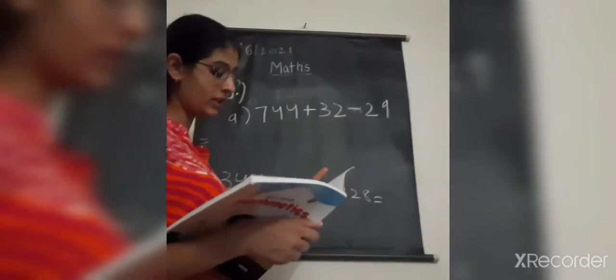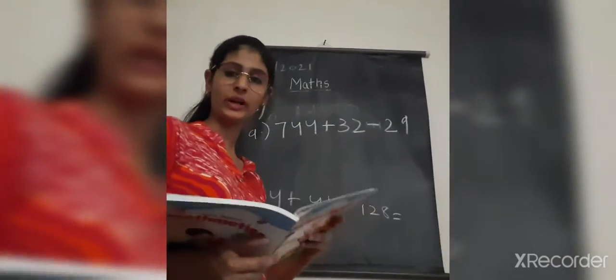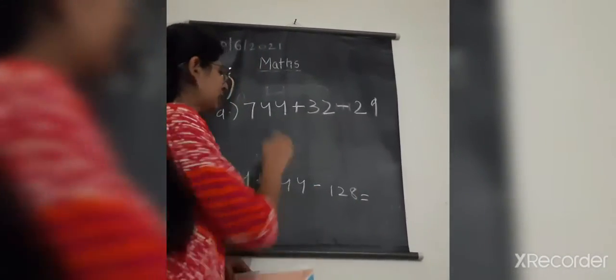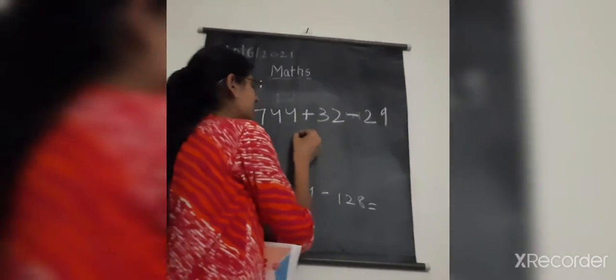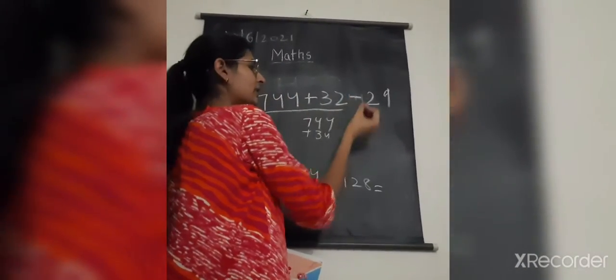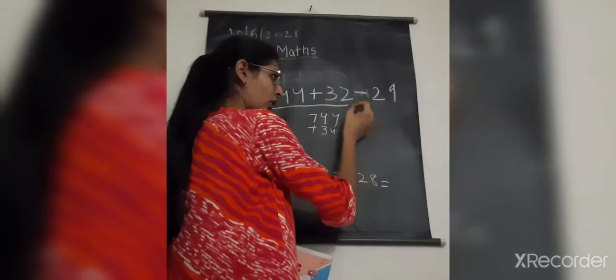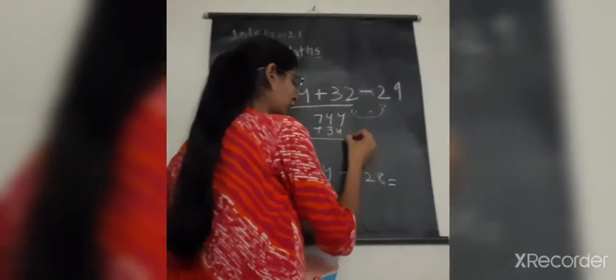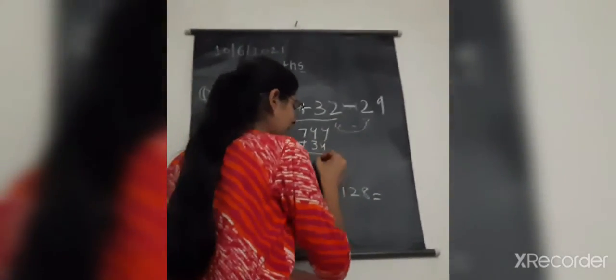Let's start with question number 20: write the correct number in each box. We have 7, 4, 4 — so we have to first add, then minus with it. So 74 plus 34: 4 plus 4 equals 8.